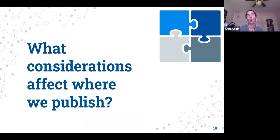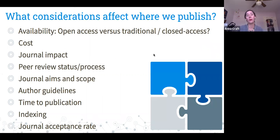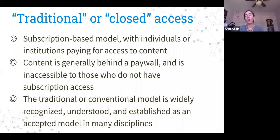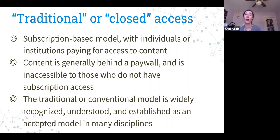Back to considerations about where we publish. The first is open versus closed access. The traditional subscription-based model has been around for many decades, where individuals or institutions — generally libraries — pay for access to content on behalf of their readers. At UNCG, we subscribe to many different journals that people on campus and off campus can read online or sometimes in print.